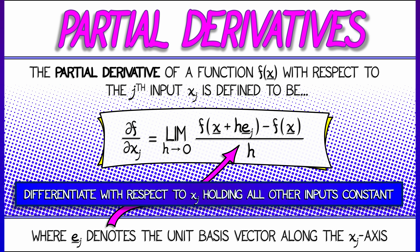Close — notice what we're doing here. x is really a vector of n inputs, so that h is multiplied by eⱼ, the unit vector along the jth axis — that basis vector.